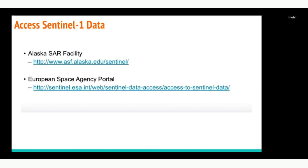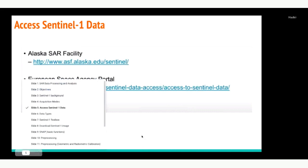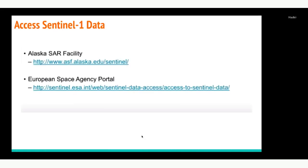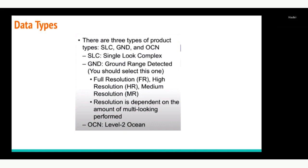Here are two links to access Sentinel-1 data: the Alaska SAR Facility and the European Space Agency portal. You can access these two links to download all the data. There is another one I forgot to mention — it is called SciHub. I will write the link at the end of the lecture. I will show how to access the data from SciHub as well.